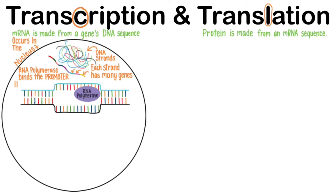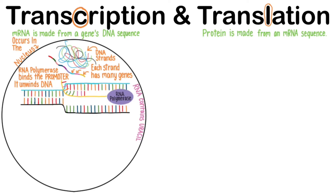RNA polymerase unwinds DNA and begins adding RNA nucleotides to a template strand of DNA, like this. However, RNA adds uracil whenever a thymine would normally be matched — that's one of the key differences between RNA and DNA. It also uses a ribose sugar in its backbone instead of the deoxyribose used in DNA. RNA polymerase continues adding nucleotides and unwinding the DNA of that gene sequence until the entire pre-mRNA transcript is built.